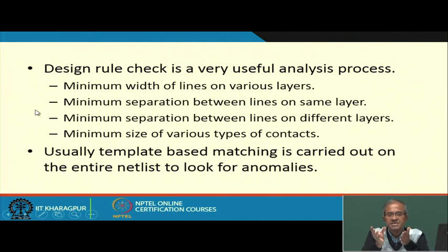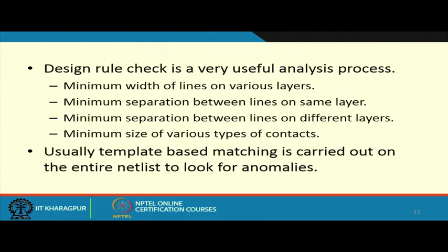Design rule check is one process which is very important: minimum width, minimum separation, similar different layers, minimum size of contacts all these have to be specified. These separations and widths are typically specified in terms of the basic feature size we refer to as lambda. As technology scales down from 0.25 micron to 0.18 micron to 0.12 micron to today's 22 nanometer and beyond, then the design rules keep changing. But all the rules are in terms of the basic feature size lambda. In terms of that parameter lambda you define the design rules and you try to verify the designs like that.